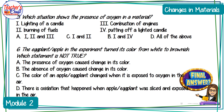Number six: the eggplant or apple in the experiment turned its color from white to brownish. Which statement is true? A — the presence of oxygen caused the change in its color; B — the absence of oxygen caused the change; C — the color changed when exposed to oxygen in the air; D — there is oxidation that happened when the apple or eggplant was sliced and exposed to air.